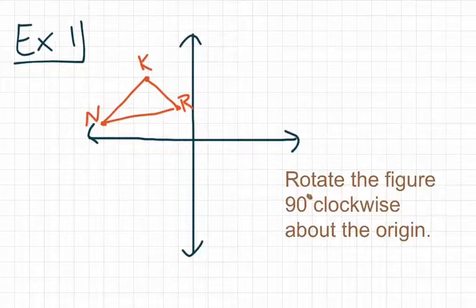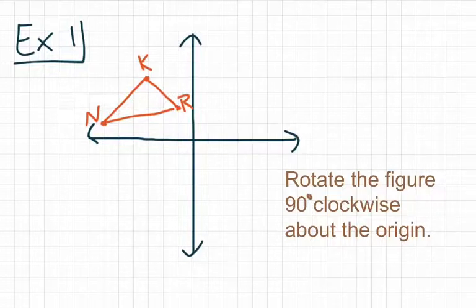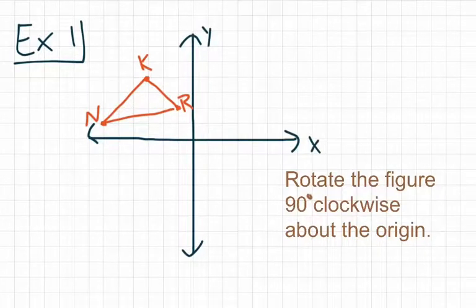But you should have your paper now rotated or turned one quarter turn. Look at where your points for point K, R, and N are right now. You'll see that those points started off in the second quadrant, but now if we reorient it to where our x-axis and our y-axis are now sort of flip-flopped, we'll see that the figure is now in quadrant one.